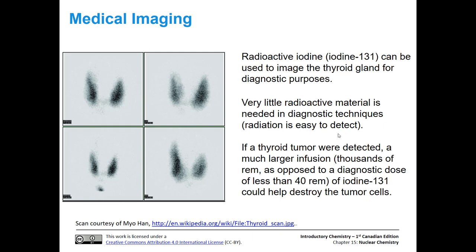Radioactive isotopes are also used in medical imaging. Radioactive iodine can be used for the thyroid gland for diagnostic purposes — essentially to image it — requiring very little radioactive material since the radiation is easy to detect. If a thyroid tumor is detected, a much larger infusion is needed: more like thousands of REM compared to a diagnostic dose of less than 40 REM of iodine-131, which can help destroy tumor cells.